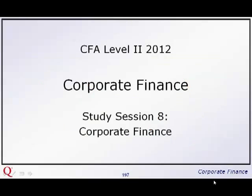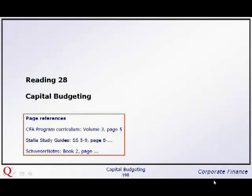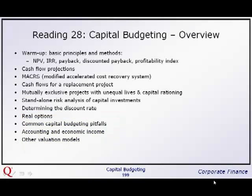That is the outline. We're going to begin study session 8 with reading 28, which is capital budgeting. We start with a review of five methods seen at level 1, then look at cash flow projections, a tax depreciation mechanism called MACRS, replacement versus expansion projects, the choice between two projects with unequal lives, risk analysis, discount rates, real options, various pitfalls, accounting versus economic income, and other valuation models linking ahead to equity.